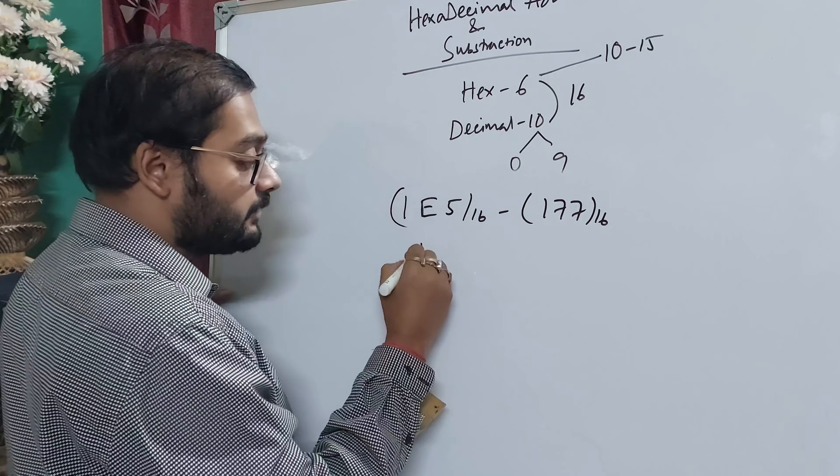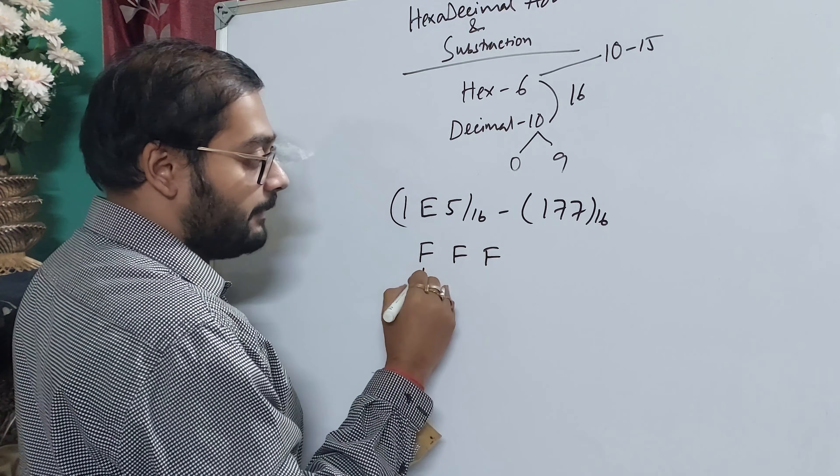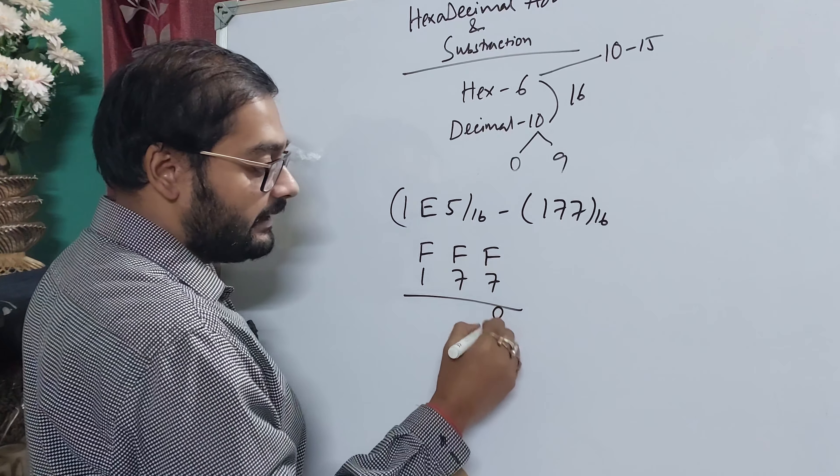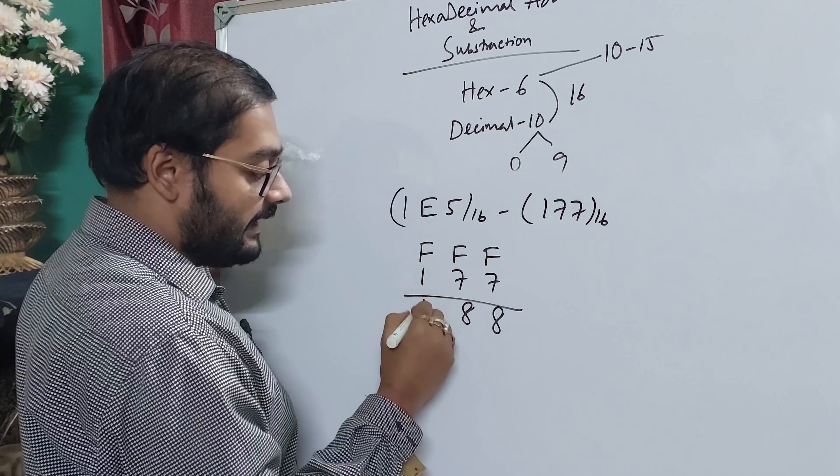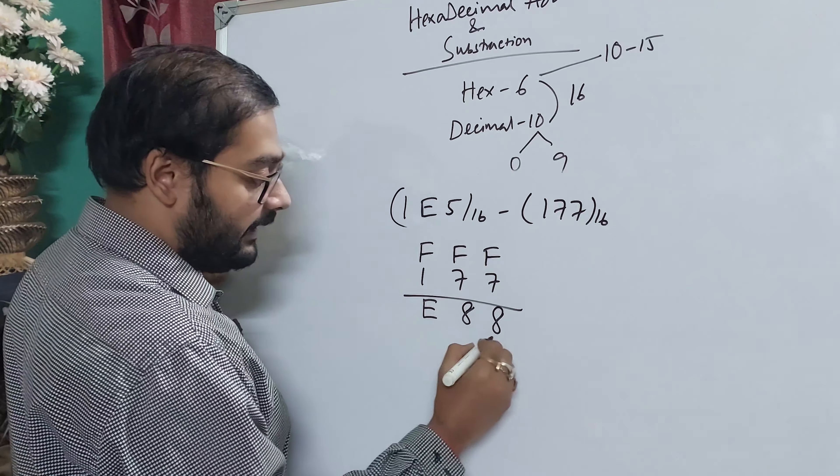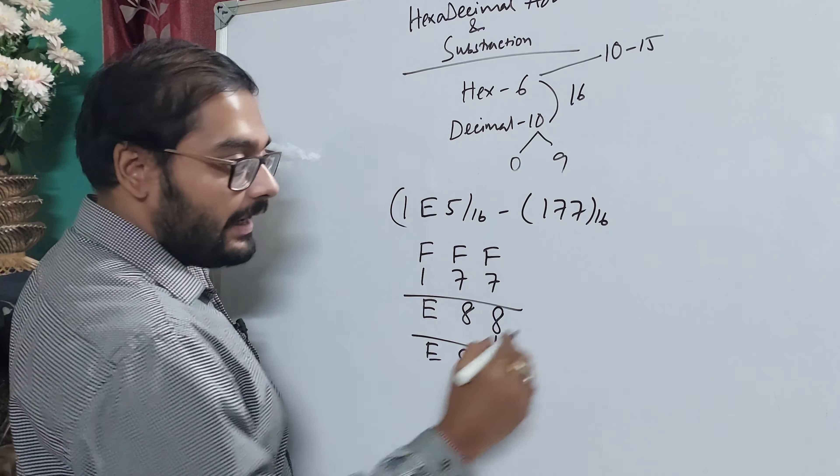So, first of all, what is hexadecimal number? Hexadecimal number is based on two terms: hex and decimal. Hex number is based on six numbers and decimal number is based on 10, total is 16. That is the base point or base number is hexadecimal.